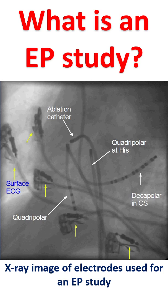ECG uses several electrodes placed on the body surface in specified locations. Hence, the usual ECG is also called surface ECG. When the signals travel from the heart to the body surface, the signal strengths come down and there is mixing of signals from different parts of the heart. So, finer details may not be available from a surface ECG.